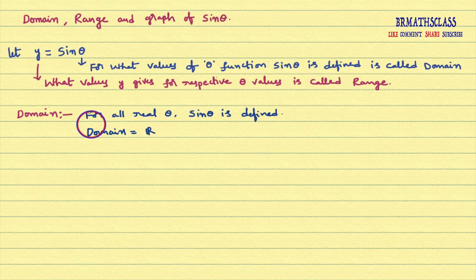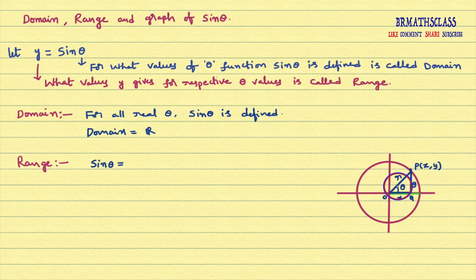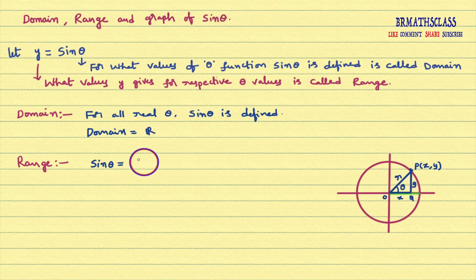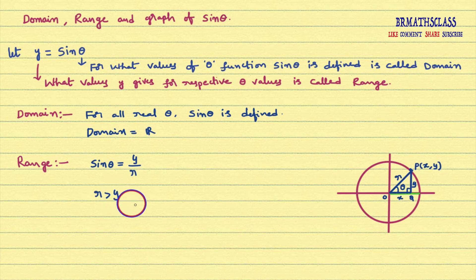Now we will try to find what is the range of sine function. You observe this diagram. If we rotate the initial ray through an angle theta — here theta is acute angle — then OP is formed. If we take the coordinates of point P as (X, Y), then OQ is X, PQ is Y, and the sine function is defined as Y by R. Now we will try to find what values Y by R gives. You observe triangle OPQ is a right angle triangle. In a right angle triangle, hypotenuse is the greatest side. That means R is greater than Y.